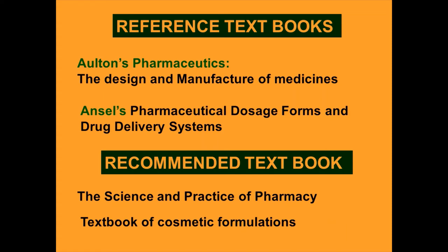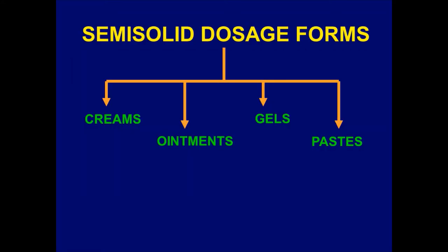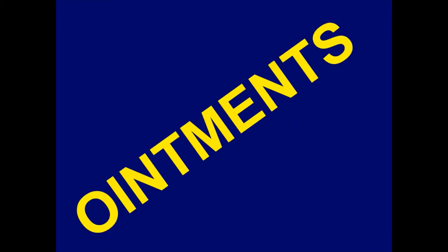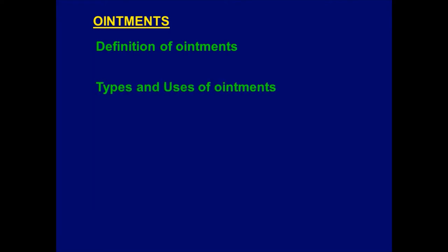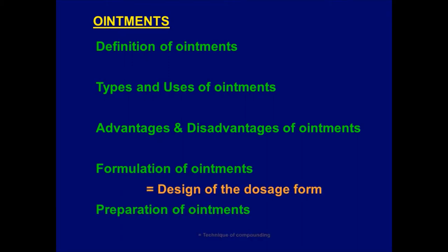These are reference textbooks and recommended ones for our course. Let's start our lecture. As we said last lecture, there are four main types of semi-solid dosage forms: creams, ointments, gels, and pastes. Last lecture we completed creams, and this lecture we will start discussing ointments. We will discuss the definition of ointments, types and uses, their advantages and disadvantages, formulation, and preparation of ointments.